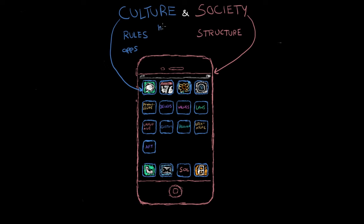Apps allow the phone to be useful, just as human ideas from culture allow society to work. The physical phone represents society because it provides structure, and software and apps represent culture because they provide the rules and input that make societies run.